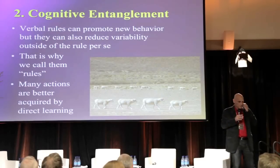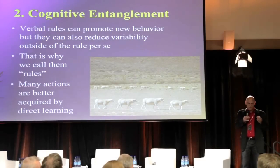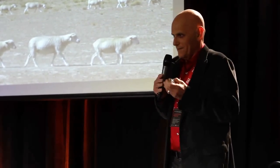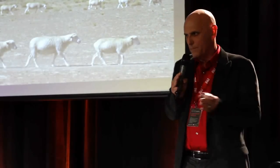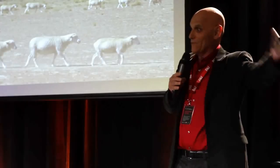Another repertoire-narrowing force is cognitive entanglement. Verbal rules can promote new behavior, but they can also reduce variability. It's called a rule for a reason — the Latin word for a straight line, regula, from which we get 'regular' and 'rule.' When you're following rules, you're following a pattern that your mind is giving you, which is by definition less variable. Learning to allow our behavior to evolve based on direct experience is hard for us. We have to, like in inner tennis lessons, not overthink the shot. It's hard for us, and we get less training in that over time within our culture.